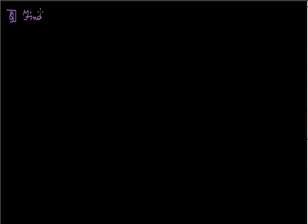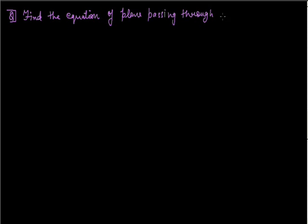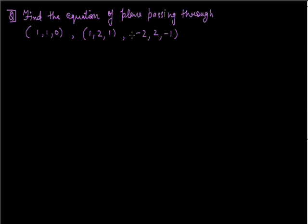Let's take a question. Find the equation of plane passing through the points (1, 1, 0), (1, 2, 1), and (-2, 2, -1).